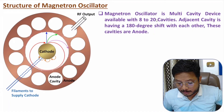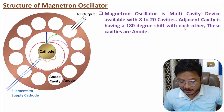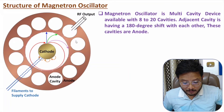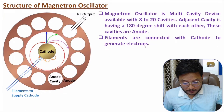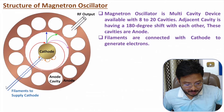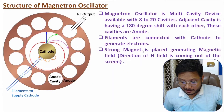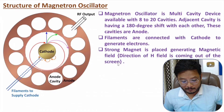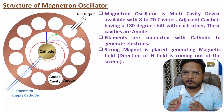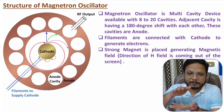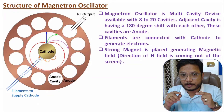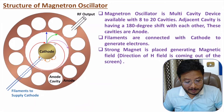An essential point: adjacent cavities have a 180-degree phase shift with each other. The cavities in sequence are 180 degrees out of phase with adjacent ones. The filament connected to the cathode generates electrons using DC supply. A strong magnet is placed to generate a magnetic field, and the direction of that magnetic field is perpendicular to — coming out of — the screen in this top view.